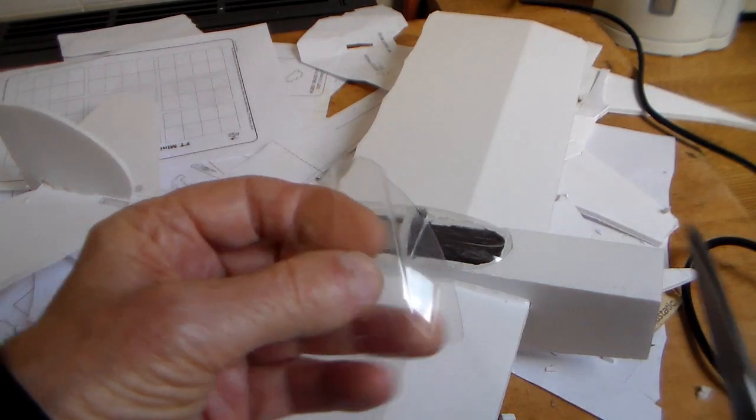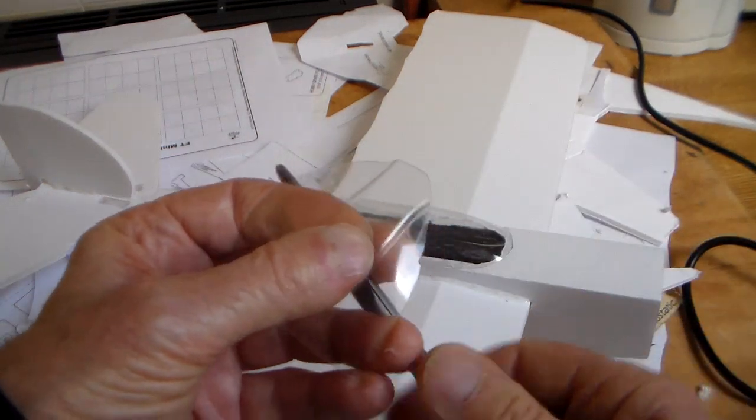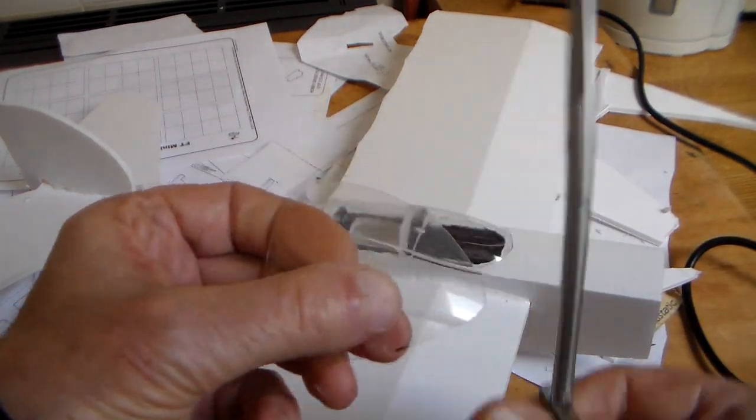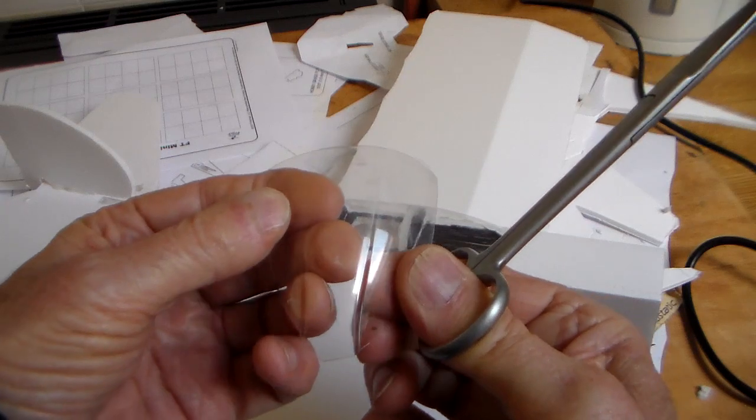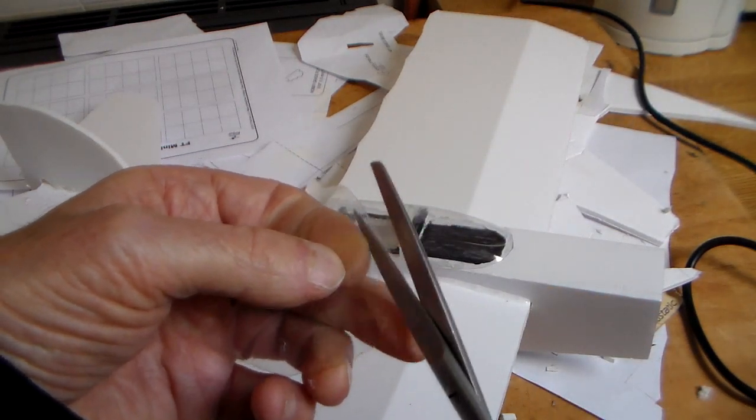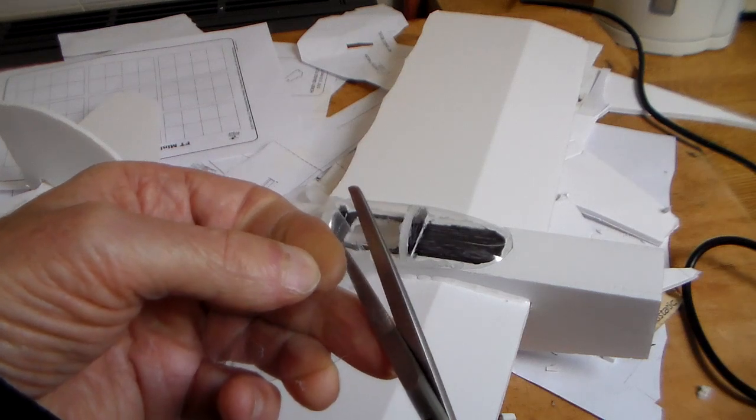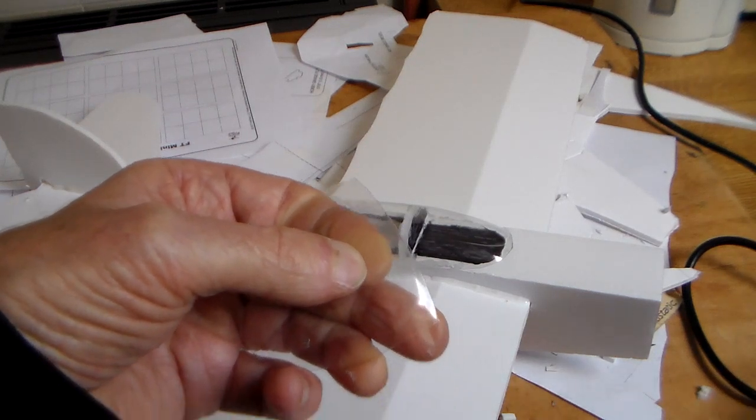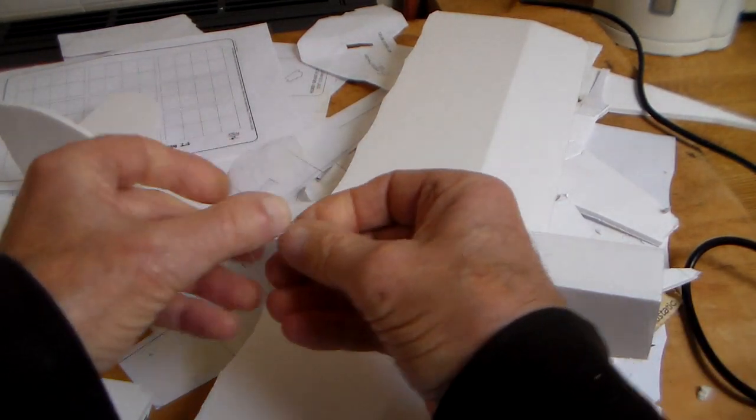Right so this is going to be the back end of this little cockpit cover canopy, whatever you want to call it. I've trimmed it up pretty much to the size and shape that I want. It cuts very easily. It's just a question of trimming and offering it up.